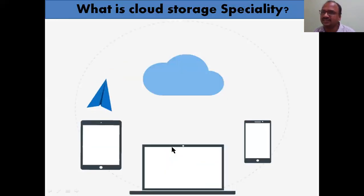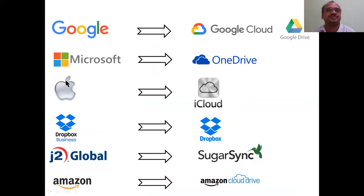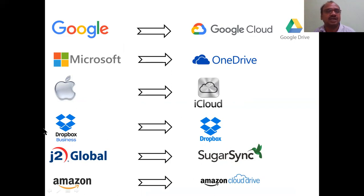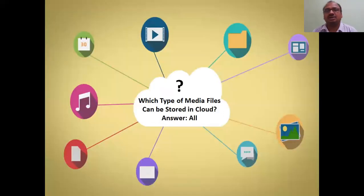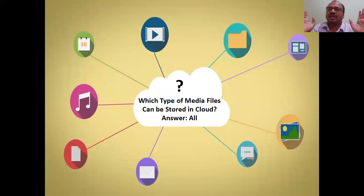These are very important points to write in the exam. Microsoft developed OneDrive. Google developed Google Drive — free up to a certain storage, after which you pay. Apple developed iCloud. Dropbox was developed as a business product. J2 Global developed SugarSync. Amazon also has Amazon Cloud Drive. Cloud is nothing but a space where companies now do business.